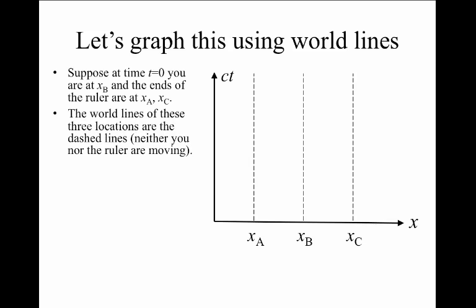The world lines of these locations are going to be vertical dashed lines. For me, neither the ruler or me are moving, so we're all at rest. If we're at rest, those are vertical lines on a world line graph like this.